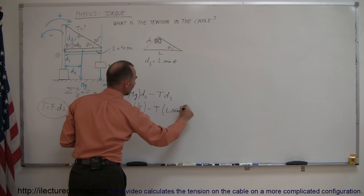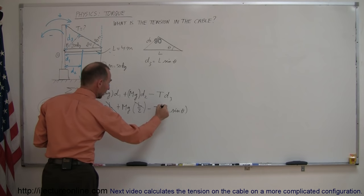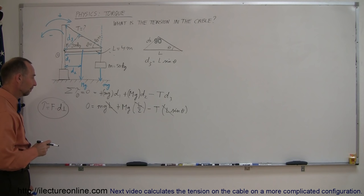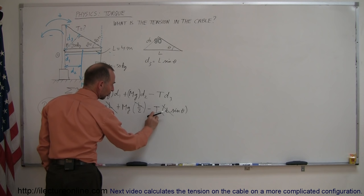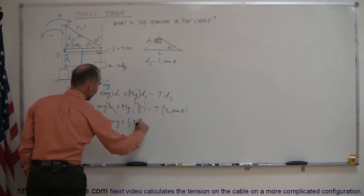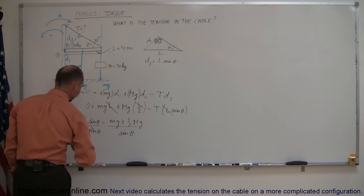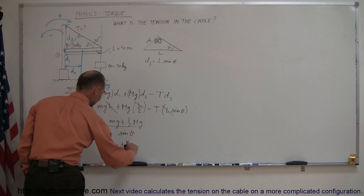Substituting d3 = L·sin(θ) into the equation, and since the whole equation is set equal to zero, we can divide both sides by L — L simply cancels out. Moving the tension term to the left side gives T·sin(θ) = mg + ½·Mg. Dividing both sides by sin(θ), we get T = (mg + ½·Mg) / sin(θ).